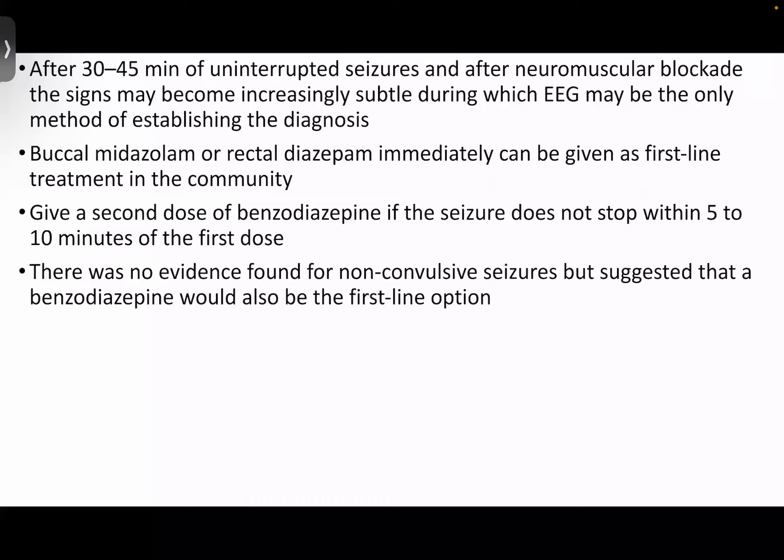In a community setting, if you see a seizure lasting for more than 5 minutes — that is, generalized seizures — you can give buccal midazolam or rectal diazepam immediately. In an inpatient setting where IV line access is available, first line will be benzodiazepines as discussed. If the seizure does not stop within 5 to 10 minutes of the first dose, a second dose of benzodiazepine can be given.